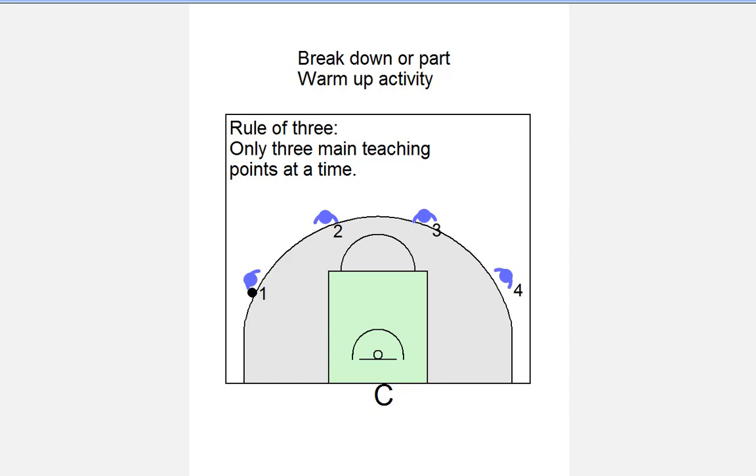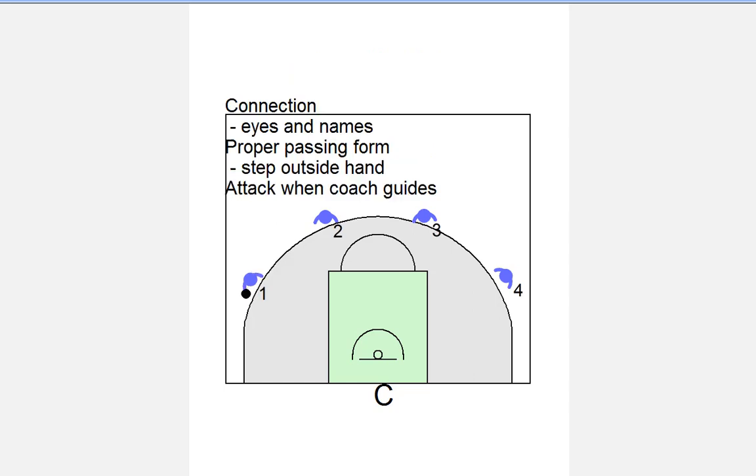One of the key things is the rule of three: you can probably only emphasize three things at a time. So this may be our first breakdown drill. We really want to work on the passing and then being able to react to the cue. So we're going to make sure that they connect by calling eyes and names, they're going to pass with the outside hand and step to pass, step to receive, and they're going to be looking at the rim so when the coach gives a visual cue they have to react and drive to the basket.